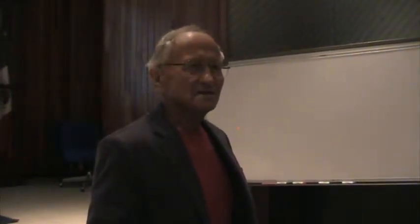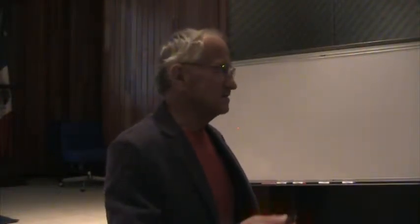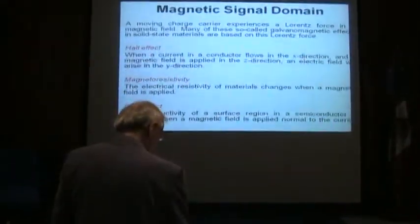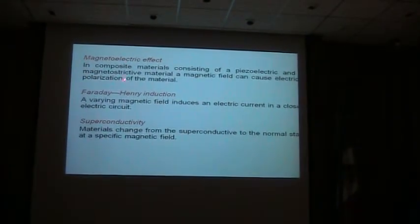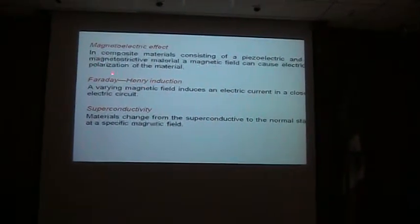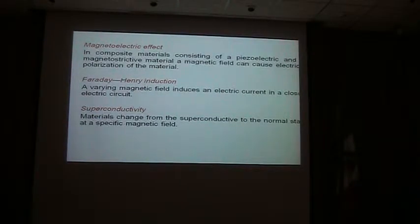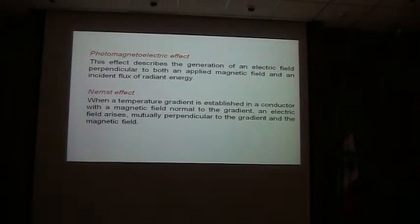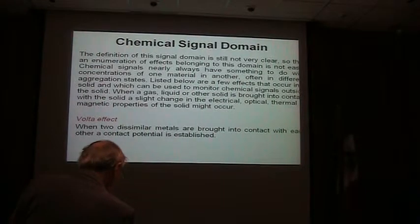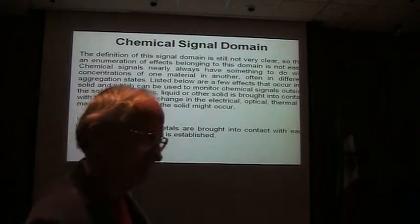There is an American scientist — a chemist — who spends all his life developing different types of gas-sensitive layers. Commercially available elements could be employed to design sensors. Magneto-electric effect: composite materials consisting of a piezoelectric and a magneto-strictive material — magnetic field can cause electrical polarization of the material. Photomagnetic effect: generation of an electric field perpendicular to both the applied magnetic field and the incident flux of radiant energy. Also the Nance effect. Chemical sensing signal domain — very important, because chemical sensors are extremely important.